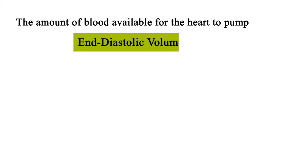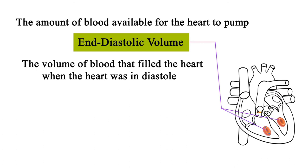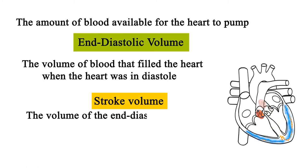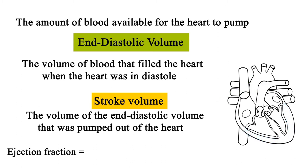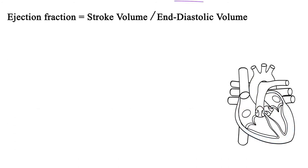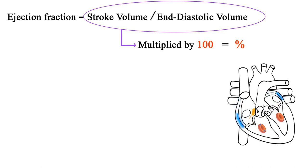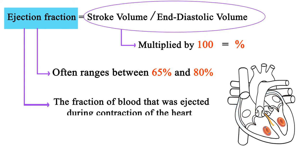Number 4: Ejection fraction is a measure of the efficiency of the heart. The end diastolic volume is the volume of blood that filled the heart during diastole, the resting state of the heart. Stroke volume is the portion of end diastolic volume that was pumped out. Ejection fraction equals stroke volume divided by end diastolic volume; the resulting decimal is multiplied by 100 and expressed as a percentage. For a healthy individual, ejection fraction often ranges between 65% and 80%. It represents the fraction of blood ejected during contraction.